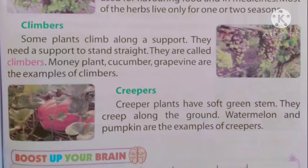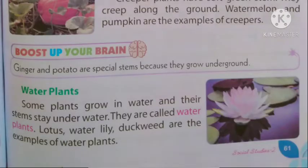Creeper plants have soft green stems. Creeper plants जो रेंगते हुए नीचे जमीन पे बढ़ते हैं, उनके बहुत ही मुलायम stem होते हैं जैसे लौकी, कद्दू - ये जमीन पे फैल जाते हैं। They creep along the ground. Watermelon and pumpkin are examples of creepers. तरबूज और खरबूजा creeper के examples हैं। Ginger and potato are special because they grow underground.